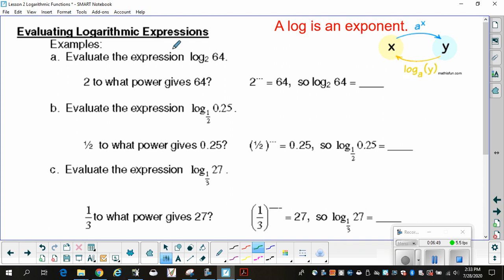Now, evaluating logarithmic expressions. Again, this just keeps reminding you a log is an exponent. I want to evaluate the expression log base 2 of 64 without a calculator. It's not hard. When you see this expression, in your mind, think, 2 to what power gives 64? What exponent am I going to put on 2 to get 64? Hopefully, you know it's 6. So, since 2 to the 6th is 64, log base 2 of 64 is equal to 6. Remember that the answer to a log is the exponent.